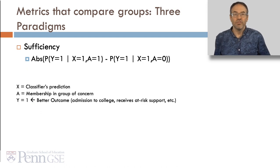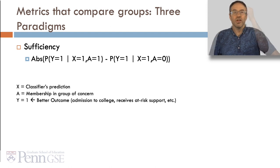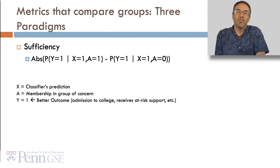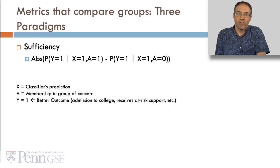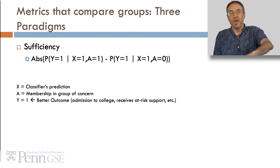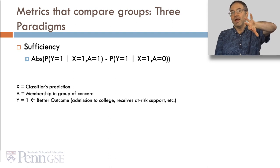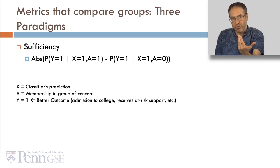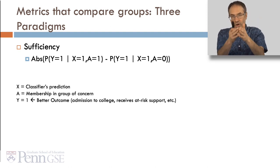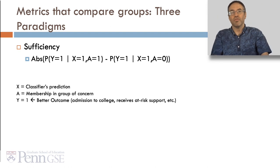Finally, for sufficiency, there is a metric simply called efficiency. You calculate it by taking the probability of the better outcome given the classifier's prediction and membership in the group of concern, and subtracting the probability of the better outcome given that same prediction and non-membership in the group of concern, then taking the absolute value.